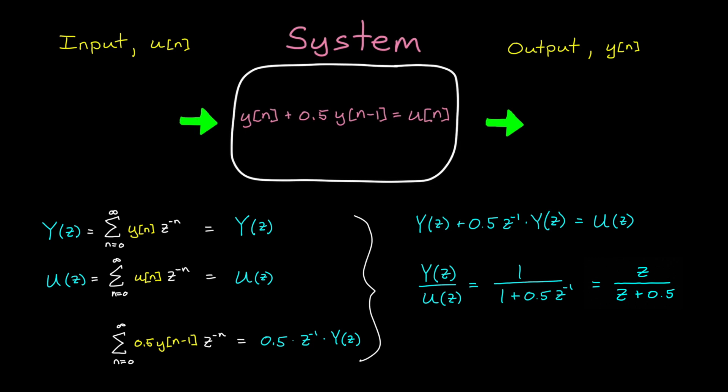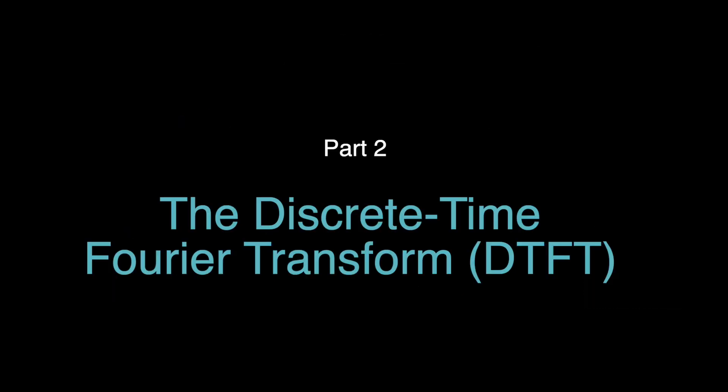Solving the Z-transform is pretty straightforward whether you have discrete time data or a difference equation. But the question I want to answer isn't really how to solve this math — it's what is the math actually doing? What is Z, and why are we multiplying the time data by it? To understand the essence of the Z-transform, I think it's helpful to first talk about the discrete time Fourier transform.